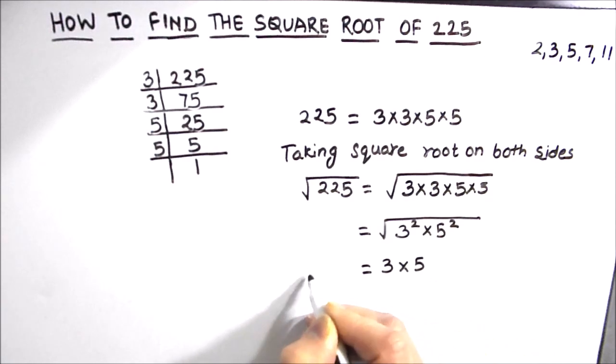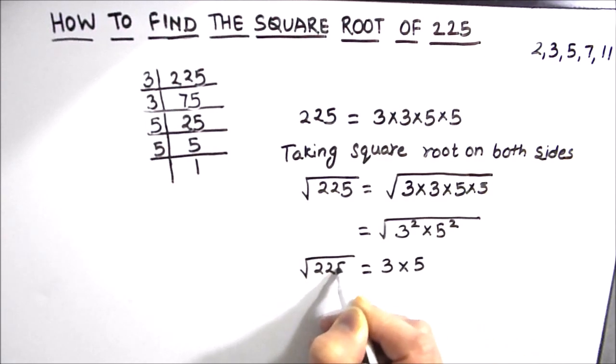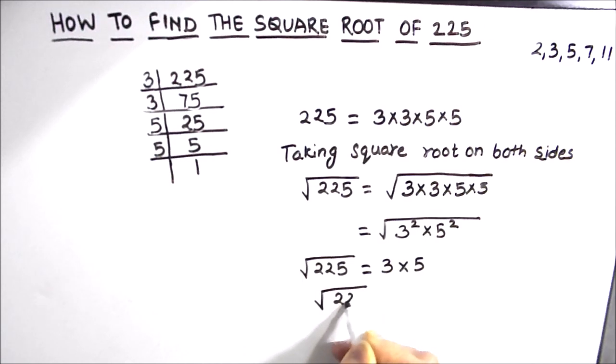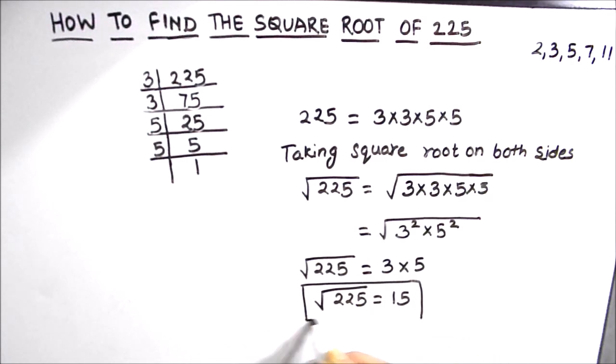These two numbers will come out of the square root sign. So square root of 225 will be equal to 3 times 5 which is equal to 15. So the square root of 225 is 15.